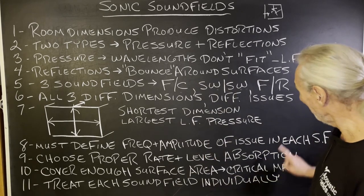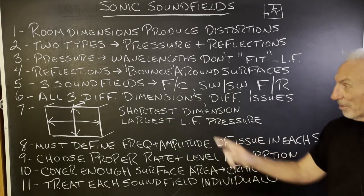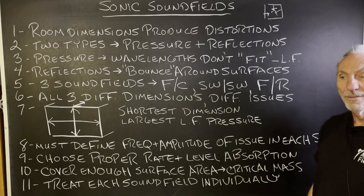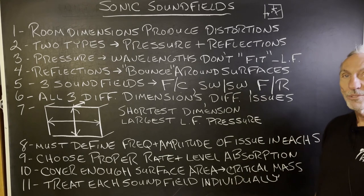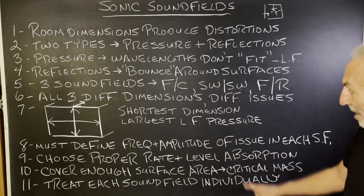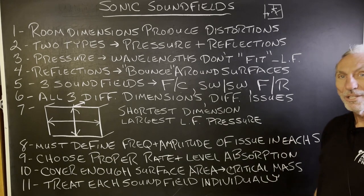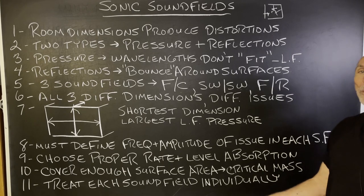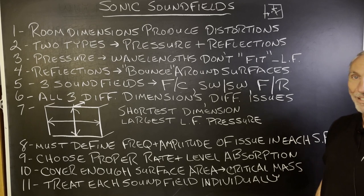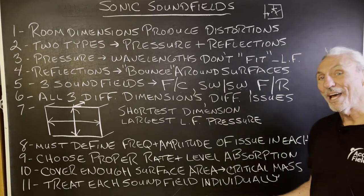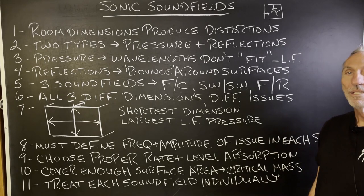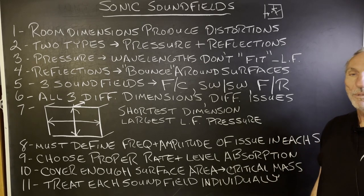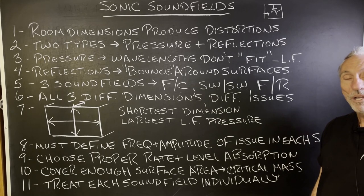You must define the frequency and amplitude on each wall surface because it's different. The more energy you put in the room, the more problems you're going to have. Choose the proper rate and level of absorption. Boxes filled with building insulation won't give you that — they won't get you the low frequency absorption. They can't. The material type inside can't. It's an effort to make something light and relatively inexpensive and call it a treatment product, but it doesn't go low enough.